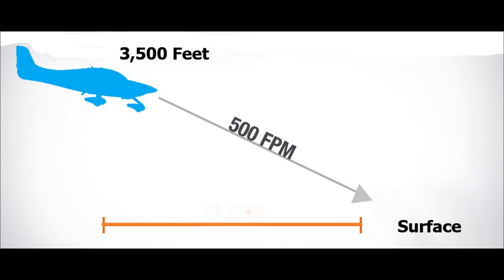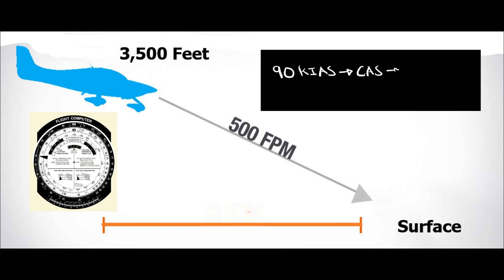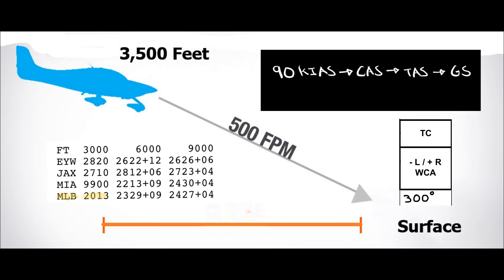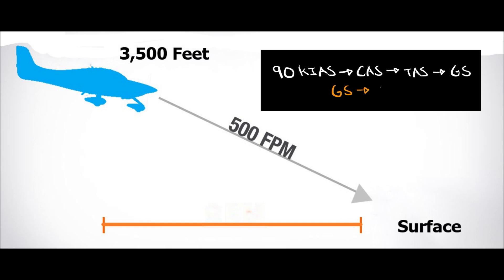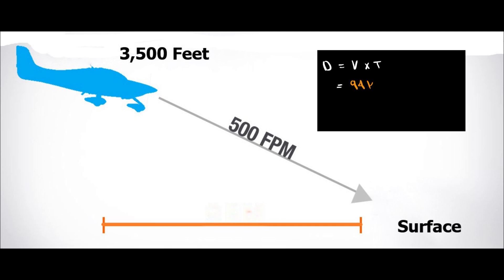Now, to determine the distance it will take us, we will have to transform our 90 knots indicated airspeed to ground speed, using the same process we did to determine the distance in our top-of-climb. We will go from indicated airspeed to calibrated airspeed using our airspeed calibration chart, from calibrated to true airspeed using our flight computer, and finally from true airspeed to ground speed using our true course and the wind forecast at 3,000 feet at our destination, which results in a ground speed of 94 knots. And finally, with the time and speed, we can determine the distance the airplane will cover on its descent with our formula or our flight computer. After completing this process, our airplane will need to start its descent 11 nautical miles before reaching the surface.